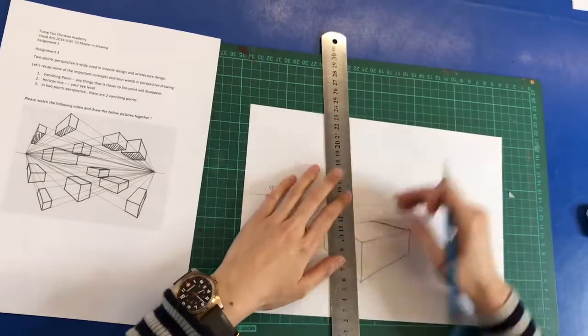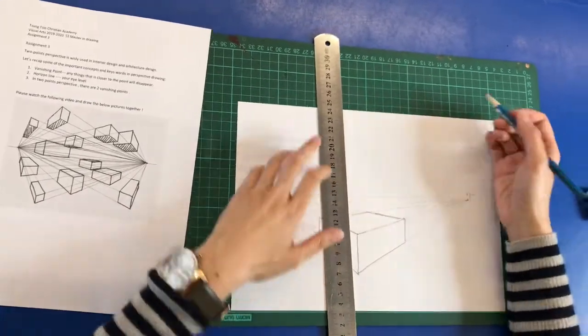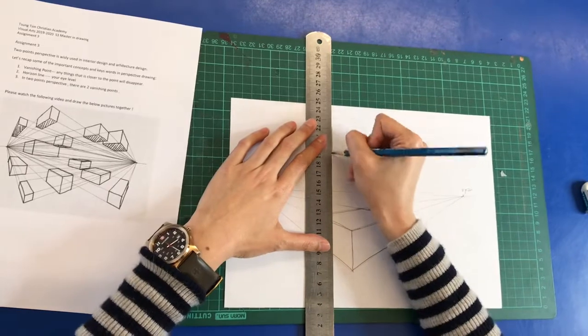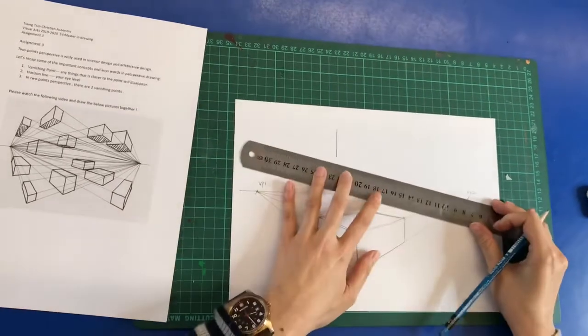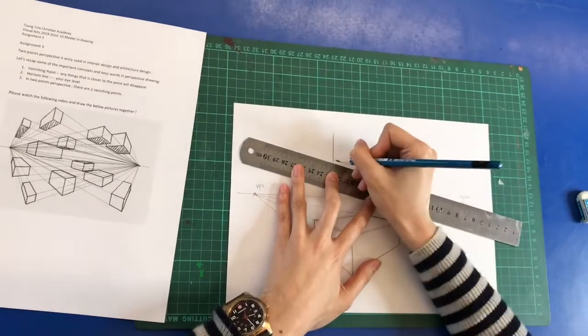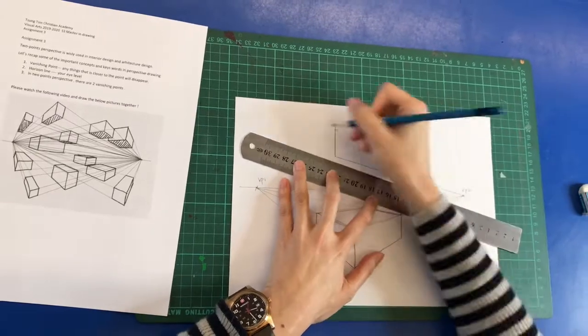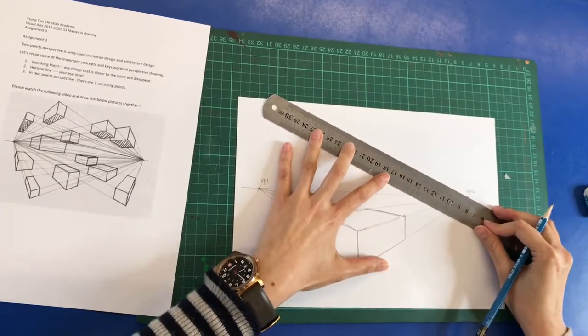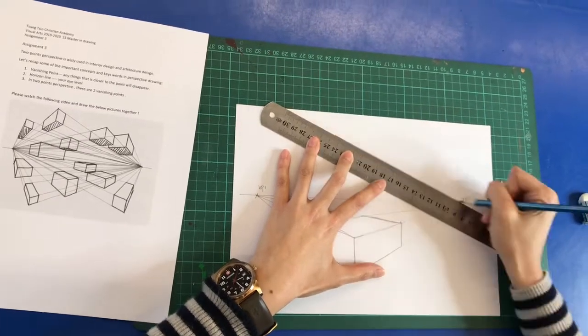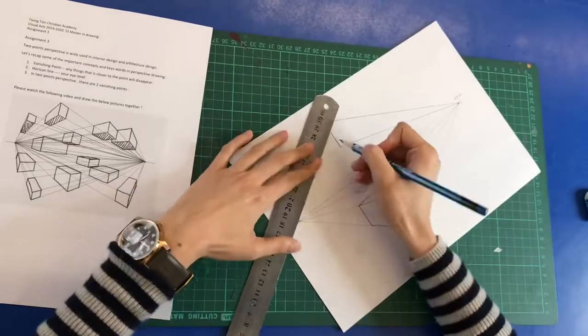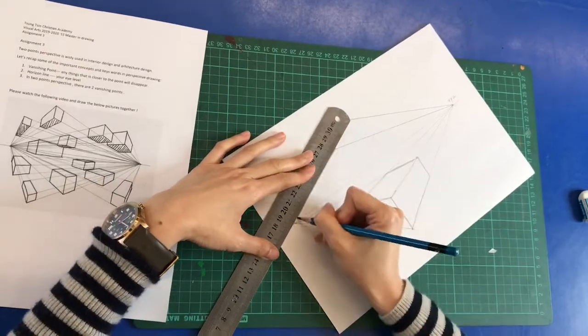And then if it is upper than the horizon, this time you will see the bottom part of the box. So again, you can start with a vertical line. This time it is upper than the horizon. And then again, diagonal line going back to VP.